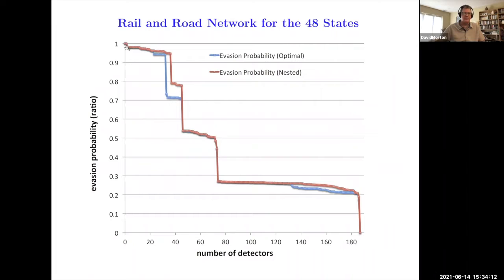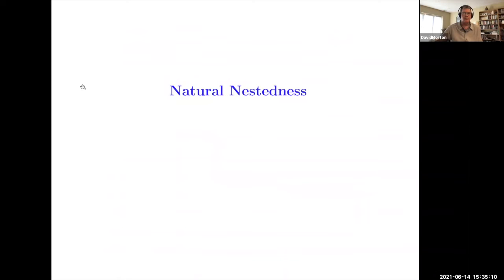This is a map of the overall evasion probability normalized for both the rail and road network for the 48 states as the budget grows. The blue line is we just secured the Great Lake region. This next big jump is when the Mexican border is completely full with detectors. This next big jump was when we did everything west of the Great Lakes. With a blue line, that's what the movie showed. The red line, in contrast, is saying they have to be nested. You can't install and then uninstall a detector. They have to be from an ordered list. You can see at certain locations there's a big gap, but overall the area between the red and the blue isn't that big.